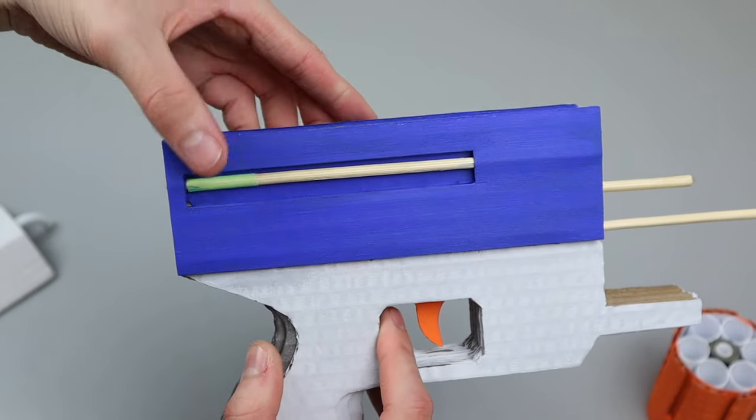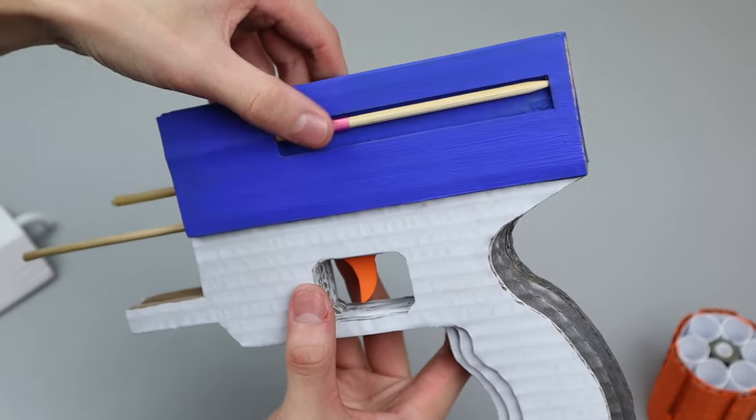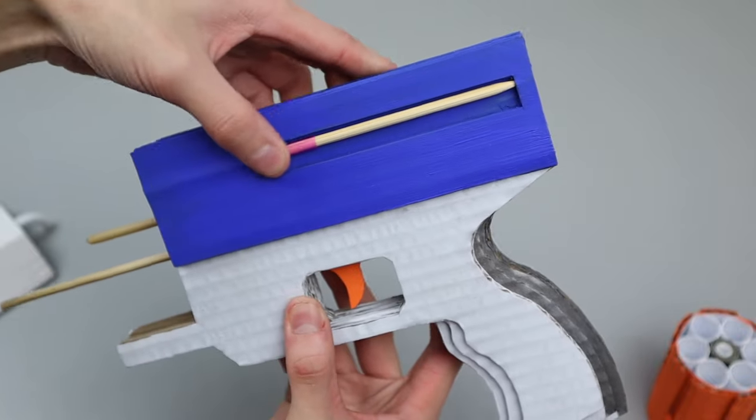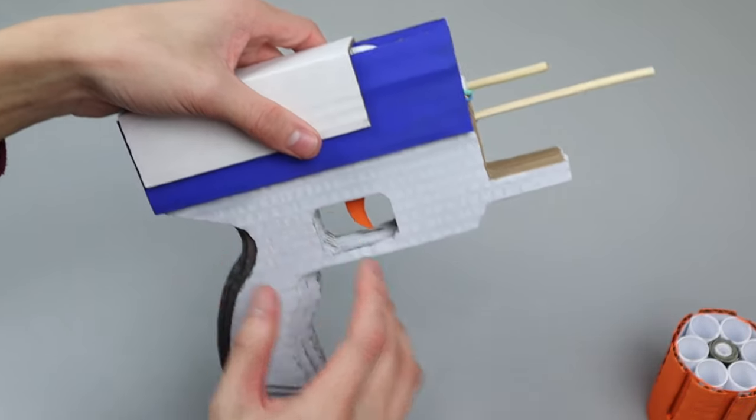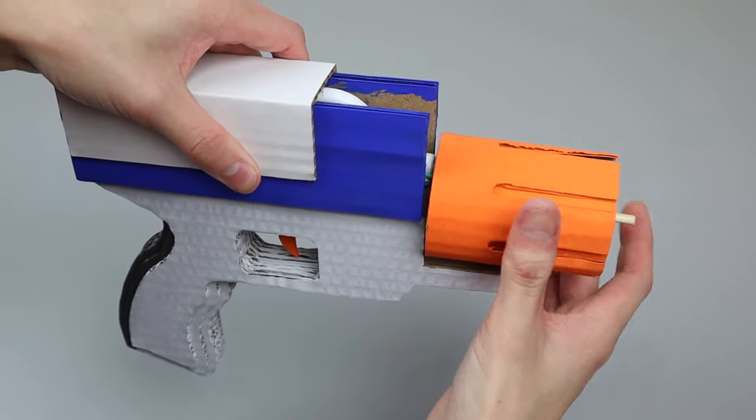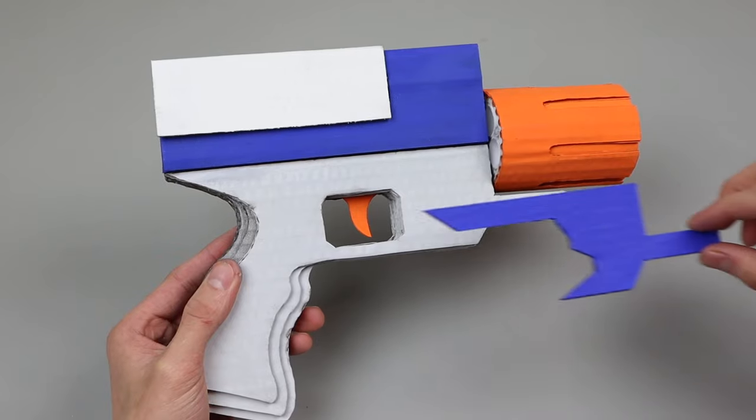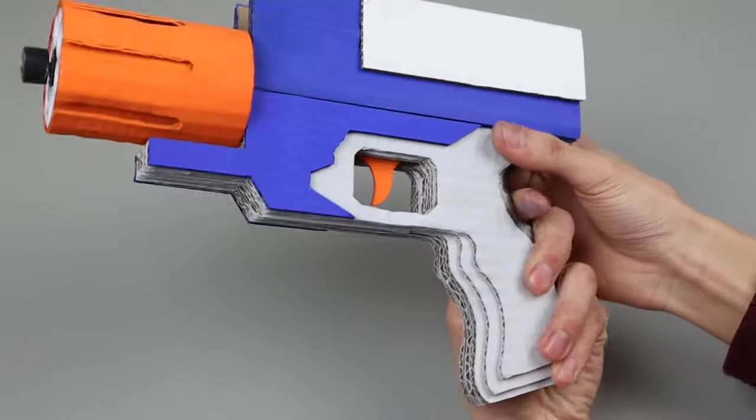To attach the charging handle to the gun, I used these straws which I kind of trapped in between this little gap here. I glued the charging handle to those straws to allow it to be able to slide back and forth but still be fixed onto the gun.